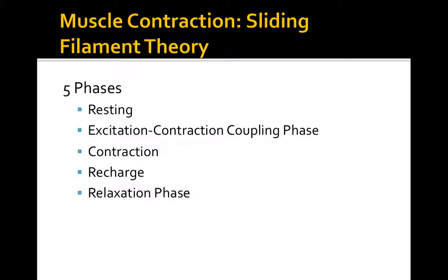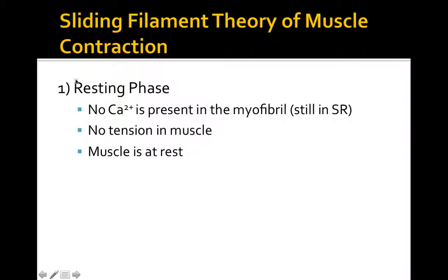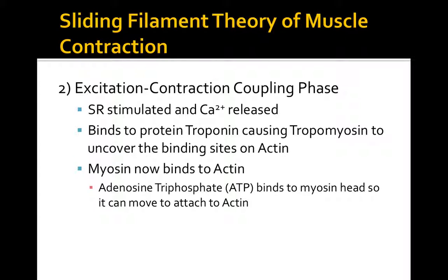For the sliding filament theory, there are five phases: the resting phase, the excitation-contraction coupling phase, the contraction phase, the recharge phase, and the relaxation phase. During the resting phase, no calcium is present in the myofibril—it remains in the sarcoplasmic reticulum because no stimulus has arrived. No nerve signal has reached the sarcoplasmic reticulum, so no calcium is released and the muscle is at rest with no tension being developed.